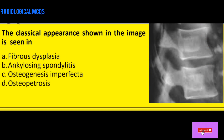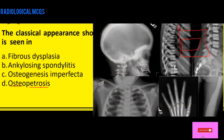Here we have an image showing a vertebra with a smaller vertebra within it — a small vertebra inside a larger vertebra. This is the bone-within-bone appearance, which is seen in osteopetrosis. Osteo means bone and petros means stone, so the bones in osteopetrosis are like stones — they are sclerosed because osteoclasts are defective. The key MCQ point is that it is dysfunction of osteoclasts, not osteoblasts, that causes the sclerosis.